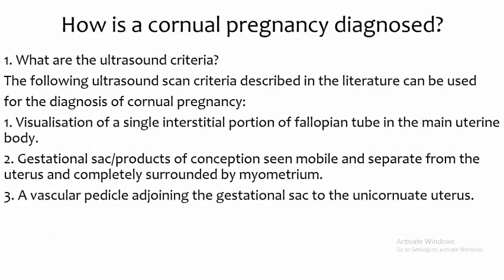How is a cornual pregnancy diagnosed? The following ultrasound criteria described in the literature can be used: visualization of a single interstitial portion of the fallopian tube in the main uterine body; a gestational sac or product of conception seen mobile and separate from the uterus and completely surrounded by myometrium; and a vascular pedicle adjoining the gestational sac to the unicornuate uterus.